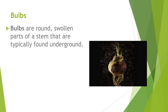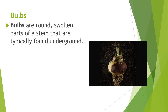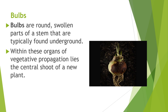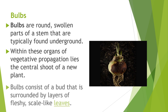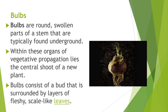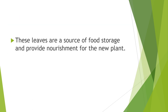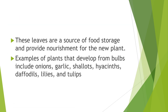Bulbs are round, swollen parts of a stem typically found underground. Within these organs of vegetative propagation lies the central shoot of a new plant. Bulbs consist of a bud surrounded by layers of fleshy, scale-like leaves, which serve as food storage and provide nourishment for the new plant. Examples of plants that develop from bulbs include onions, garlic, shallots, hyacinths, daffodils, lilies, and tulips.